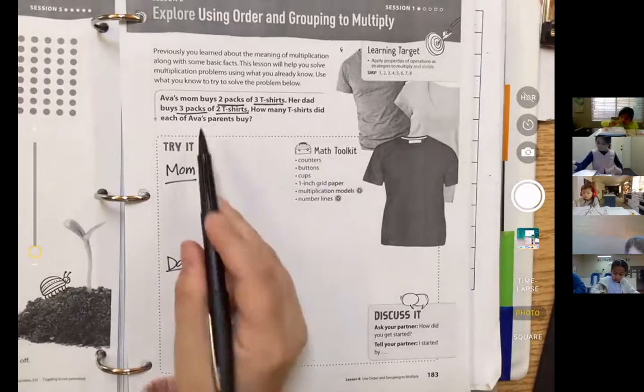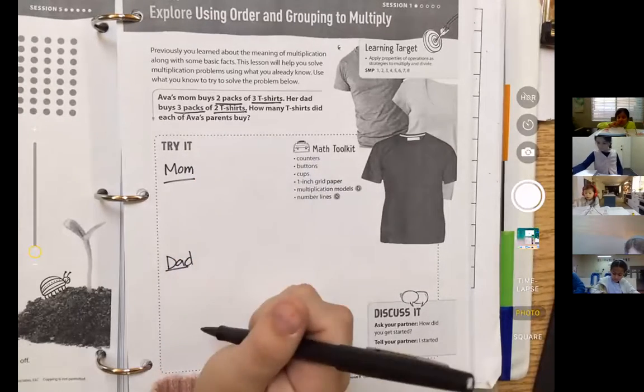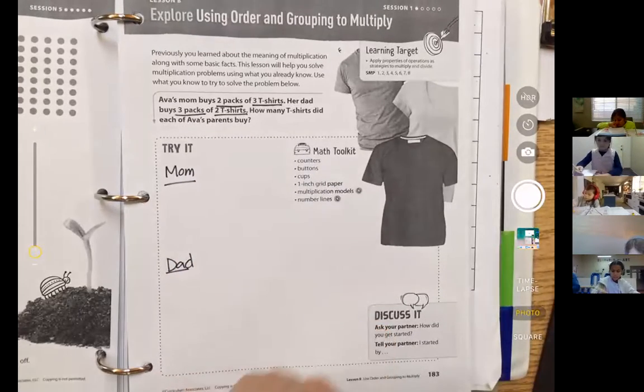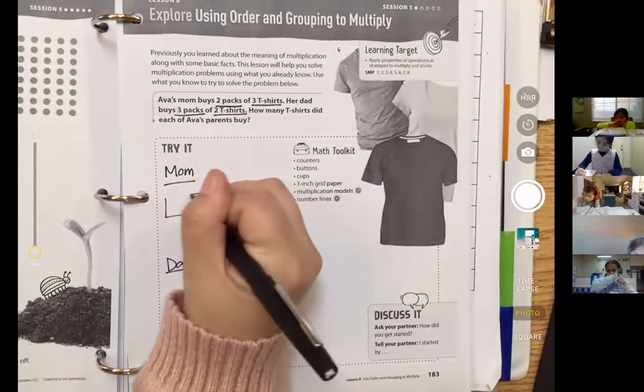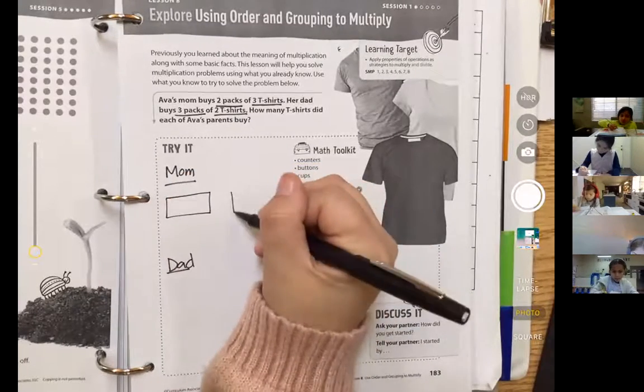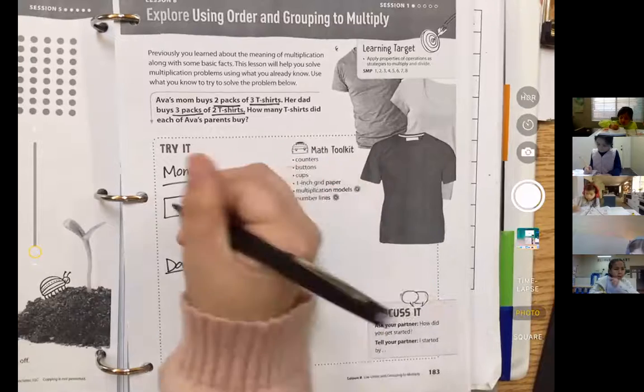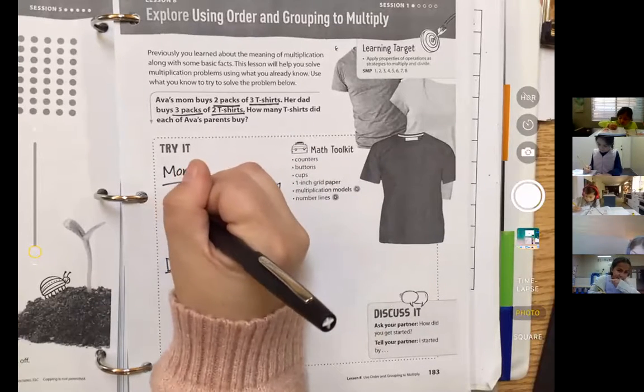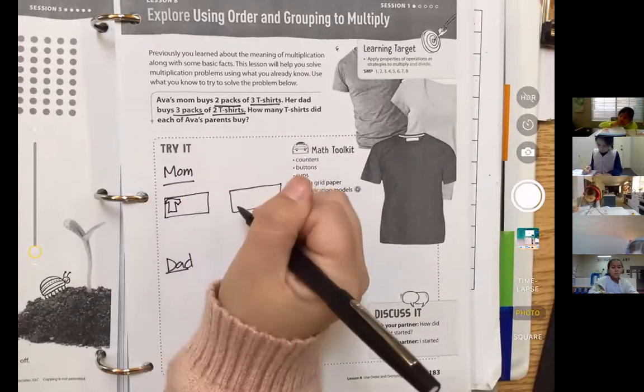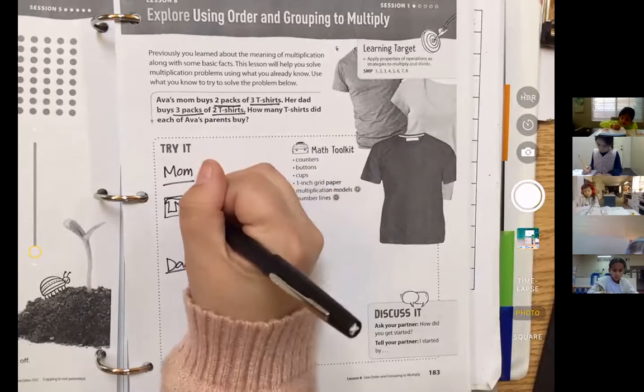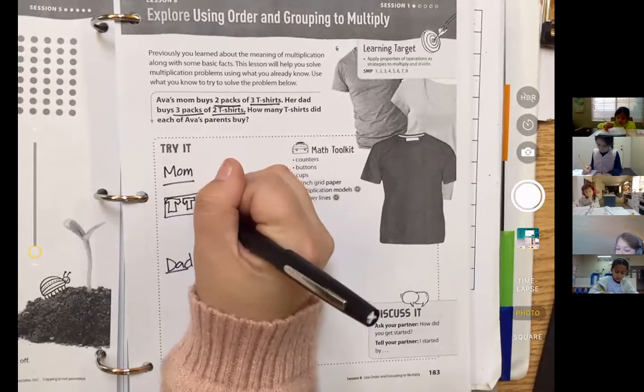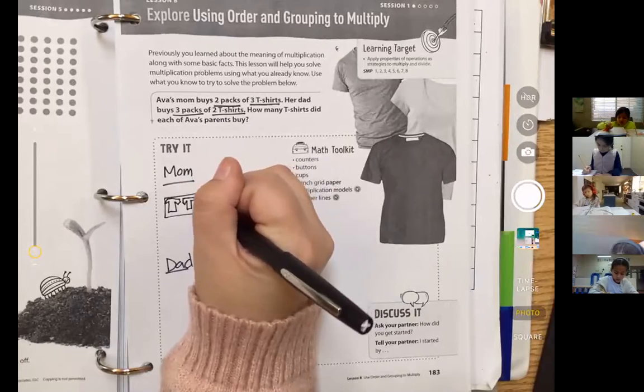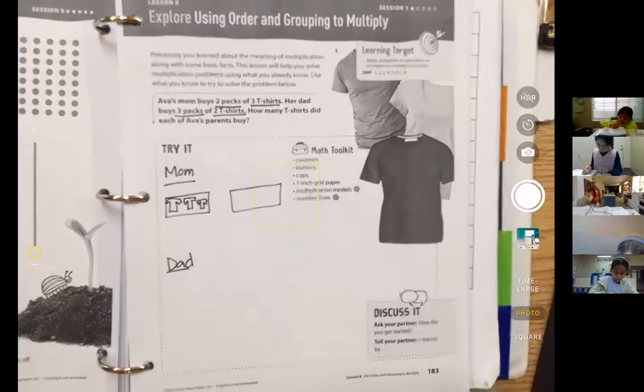Okay, so mom bought two packs of three t-shirts. I'm going to show you how I would do that. Okay, here's one pack. Here's two packs. I'm going to use a quick drawing. What did you say? Two packs of three. There's my quick drawing. Your drawings may be much better than mine, and that's okay.